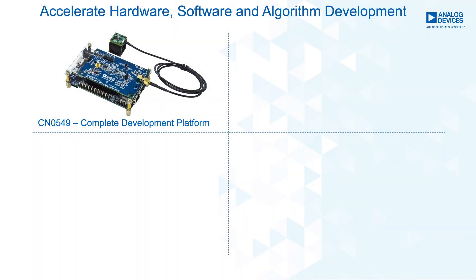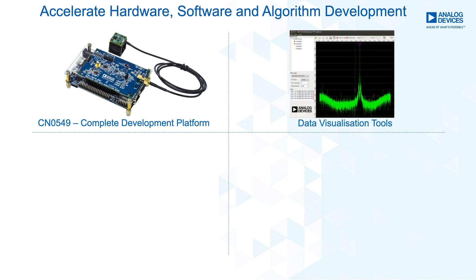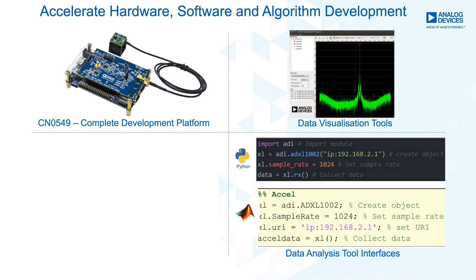CN0549 is a complete development platform that provides mechanically secure, wide bandwidth sensor data with robust, high-fidelity data acquisition. Open source embedded software streams data directly to MATLAB and Python-based data analysis tools for real-time processing and machine learning algorithm development for predictive maintenance services.